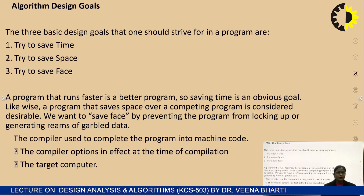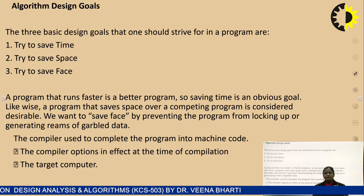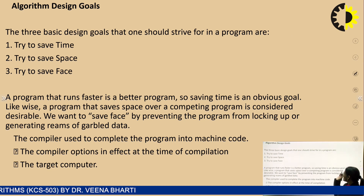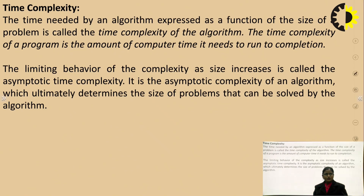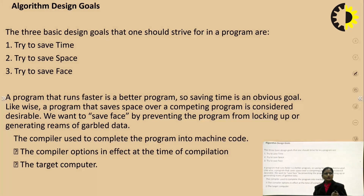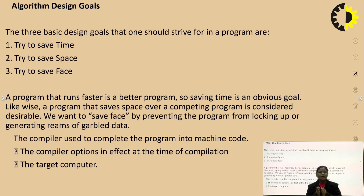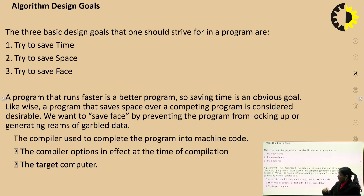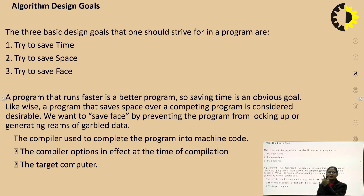Algorithm design goals: the three basic design goals one should strive for in a program are: first, try to save time — we want an algorithm that takes much less time; second, try to save space — a program that runs faster is better, and saving time is an obvious goal; likewise a program that saves space over a competing program is considered desirable.